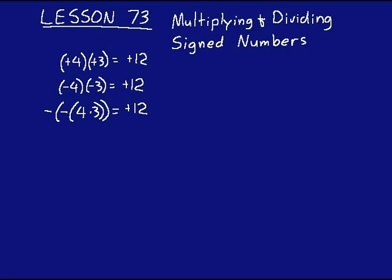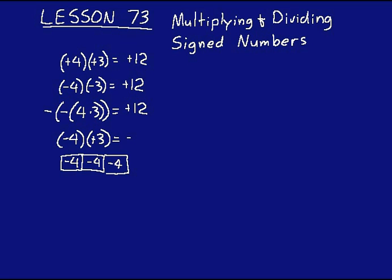Now try this one where one of the signs is negative and the other one is positive. Negative 4 times positive 3 — just think about that. You could have three groups of negative 4. Isn't that the same thing? You're saying negative 4 times a positive 3, three groups of negative 4. That would be a negative 12 if you added all of those together. So any time you multiply two numbers that have opposite signs, your answer is going to be negative.